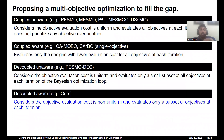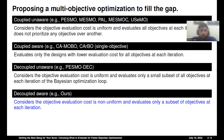State-of-the-art multi-objective optimizations can be divided into three categories — coupled unaware, coupled aware, and decoupled unaware — based on their evaluation strategy and assumption of objective evaluation cost difference. We see there is a gap, where we can consider the objective evaluation cost is non-uniform, and we can evaluate a small subset of objectives at each iteration. So there is a scope for decoupled aware techniques, and these techniques can be particularly useful for resource-constrained applications when the difference between objective evaluation costs is higher.